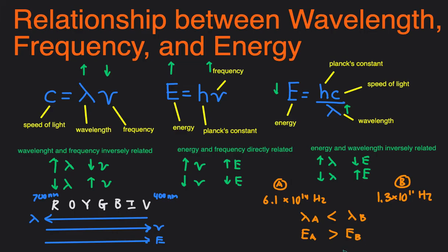And that's it. Hopefully that video wasn't too confusing, and it makes a little bit more sense between the relationships now. So to summarize: wavelength and frequency are inversely related, wavelength and energy are inversely related as well, and frequency and energy are directly related.